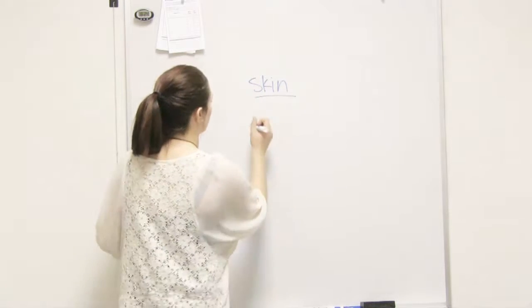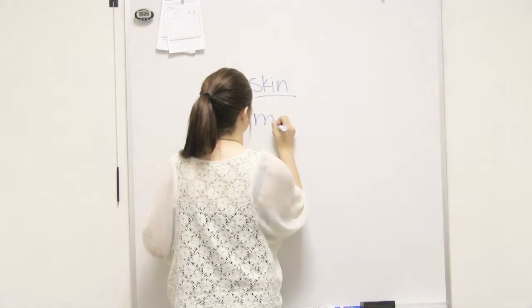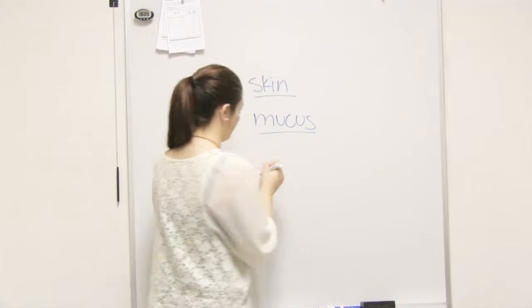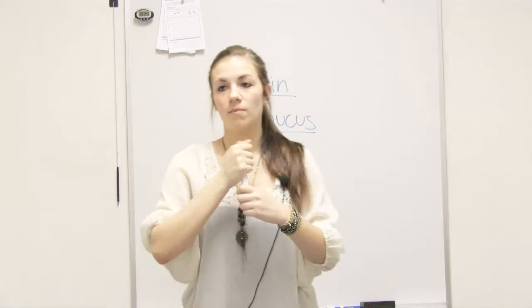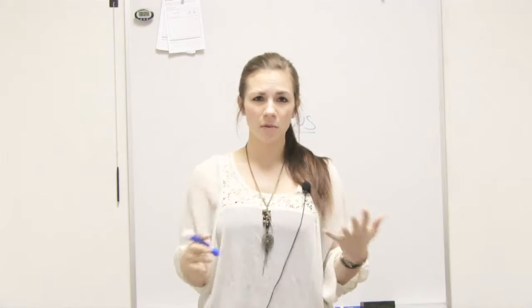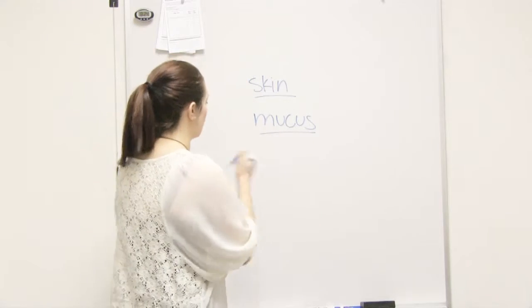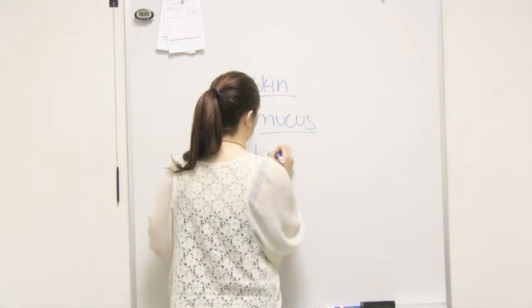The next one is mucus. Mucus lines a lot of your internal organs and things like that. It prevents bacteria from attaching to your body's surfaces.